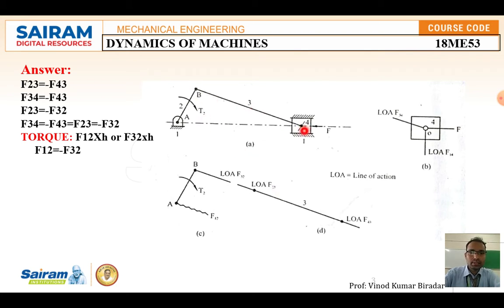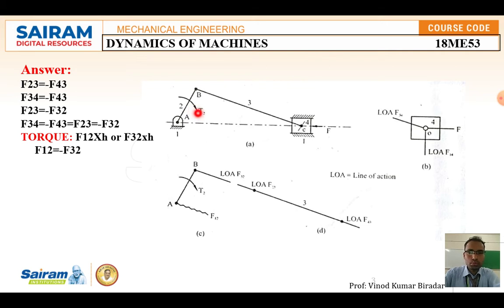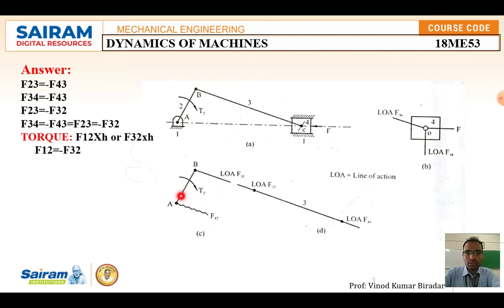One force acts at each end of element three, but directions are unknown and calculated later. For element number two, there are two forces acting — one from the fixed point and one from element three, F32. Because of these two forces, a torque is produced, which you need to calculate while solving the problem. Place element AB and draw the free body diagram showing F32 and the fixed point A. This completes the free body diagrams of all three elements.